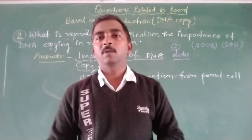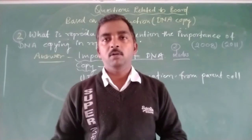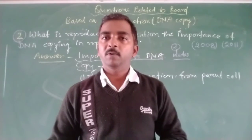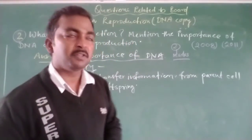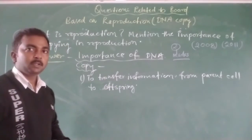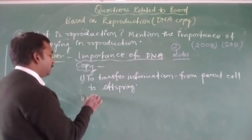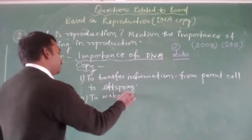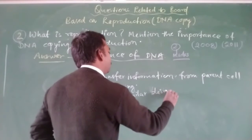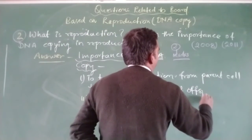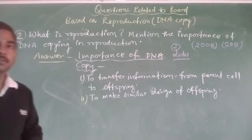If the parent's DNA is transferred directly to the offspring without copying, the number of DNA molecules would decrease in the parent as well as in the daughter cell, and the body design would be different. So to transfer the same amount of DNA from parent to offspring, DNA copying is necessary. The second importance of DNA copy is to make a similar body design in the offspring.